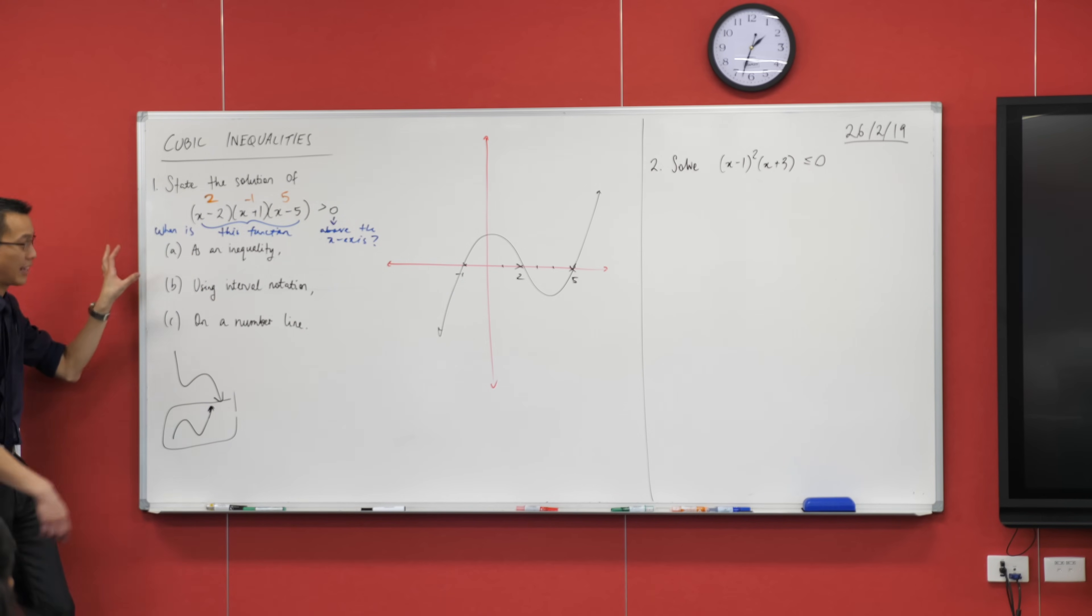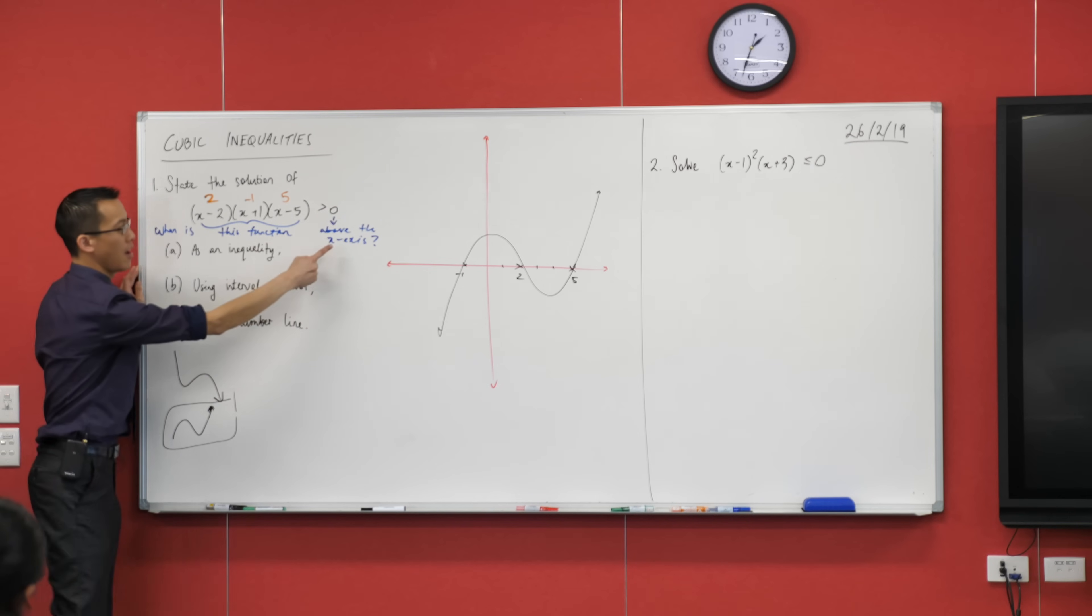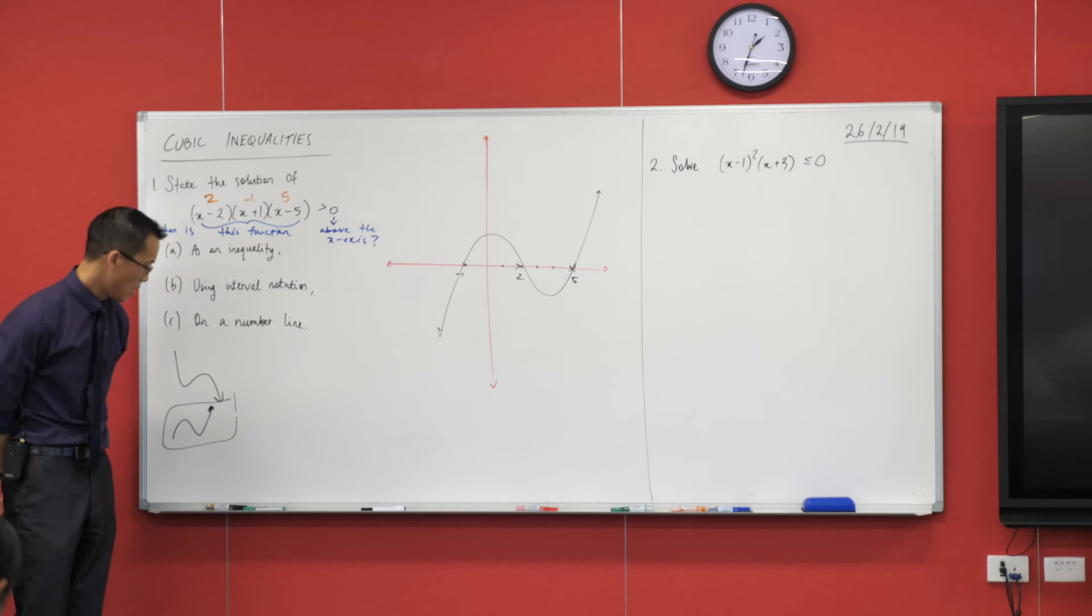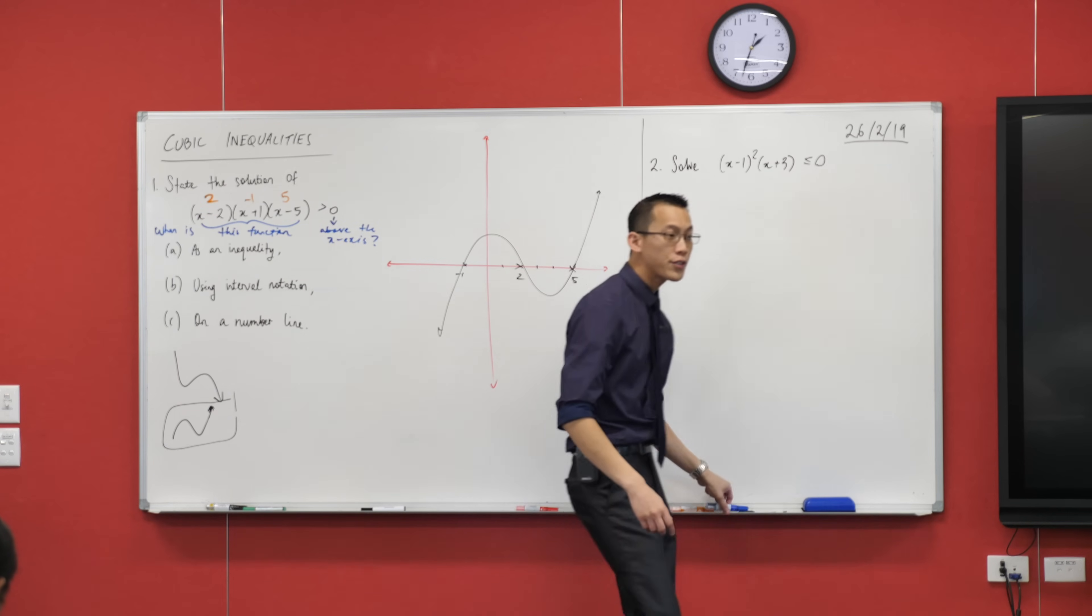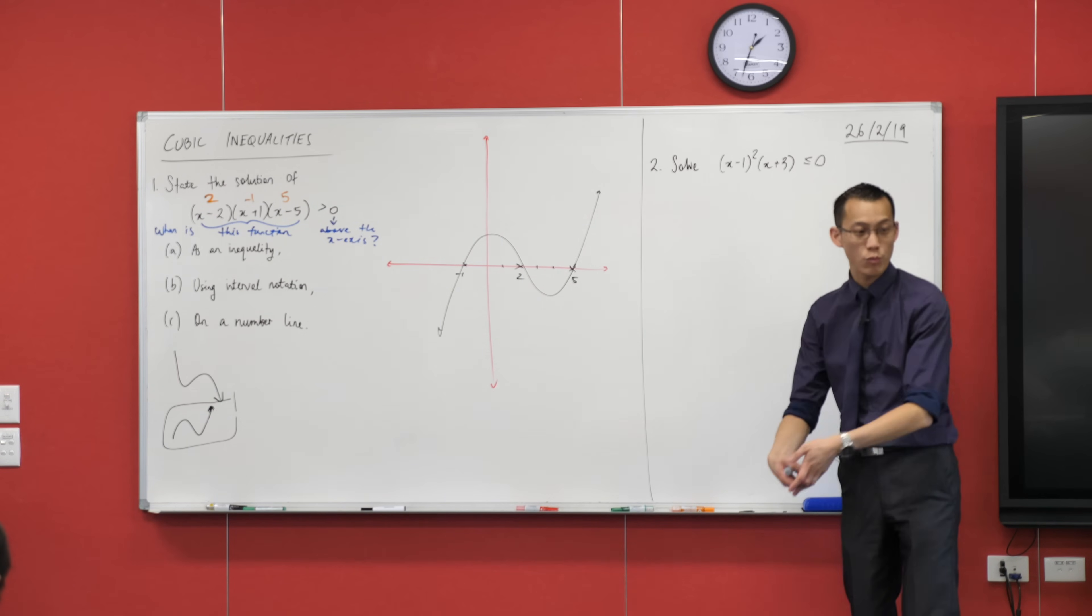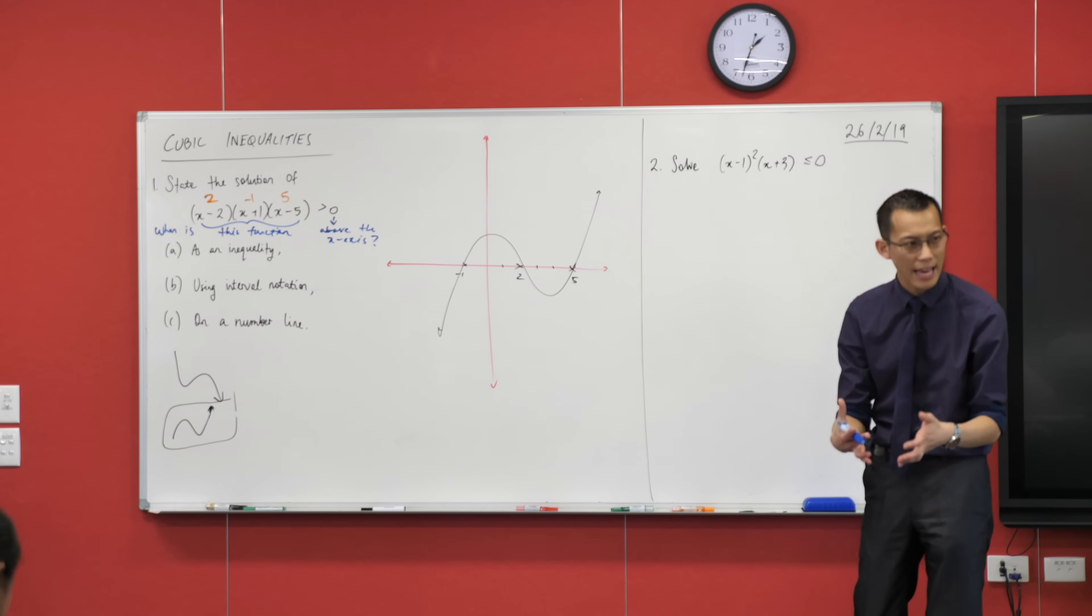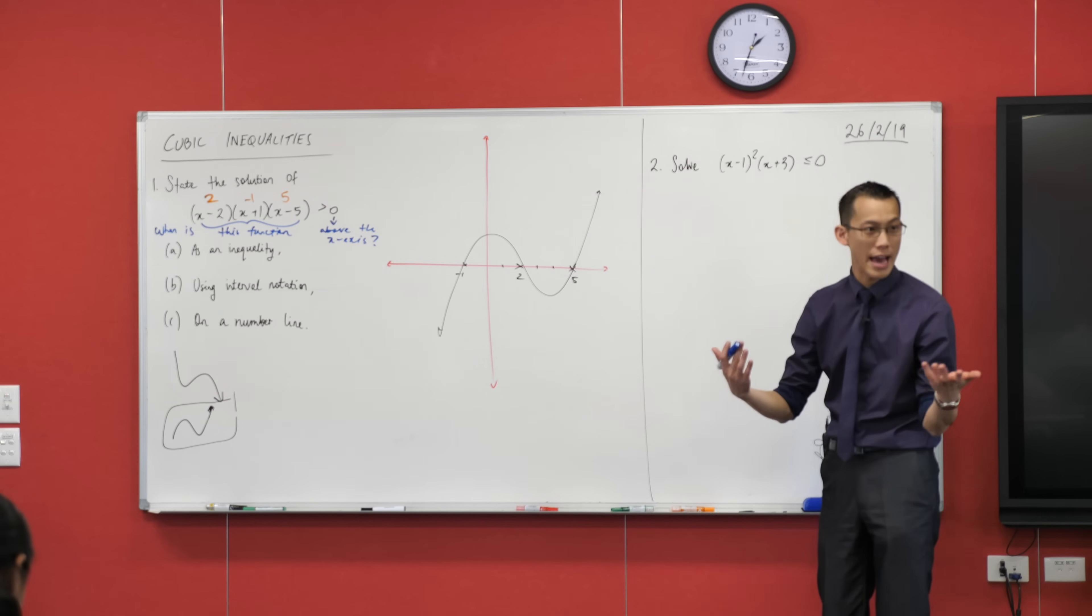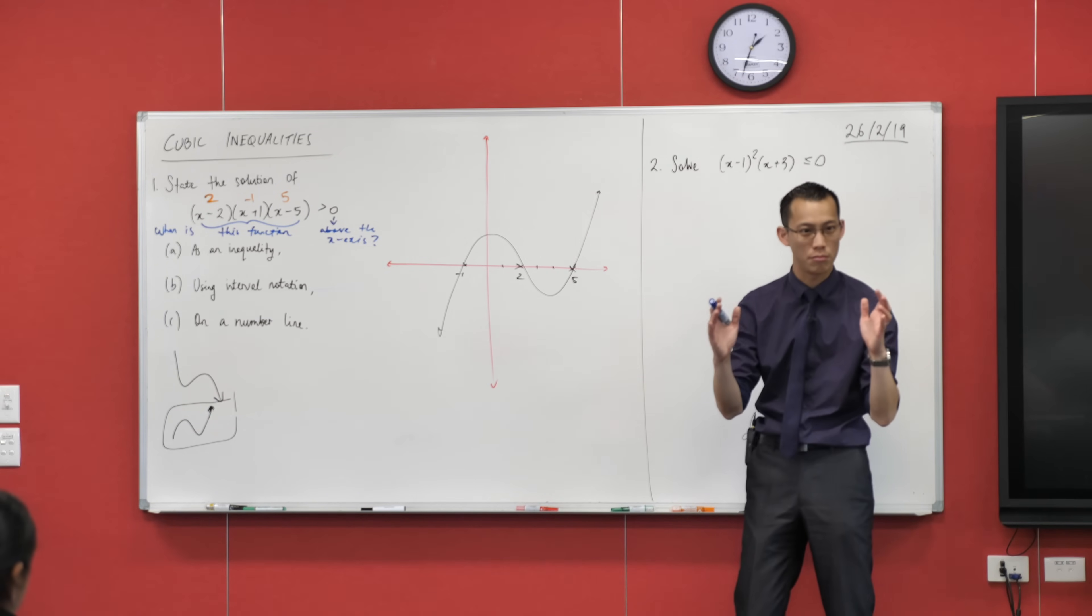So the question is asking, when is that function above the x-axis? And you can kind of see those portions, can't you? If you've got another colour, I'd love you to grab that out and whichever way you like, let's highlight the sections of this graph that are above the axis.